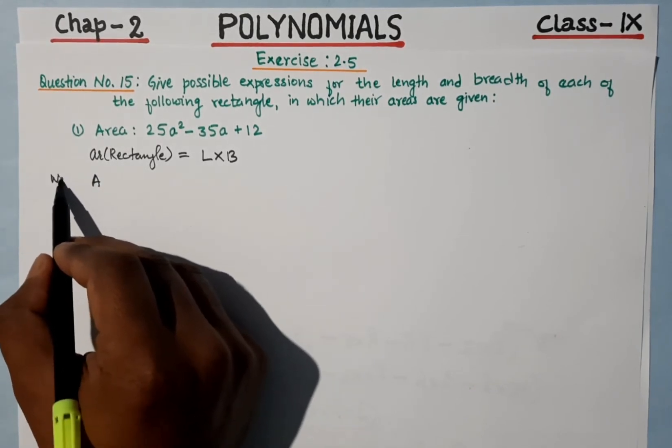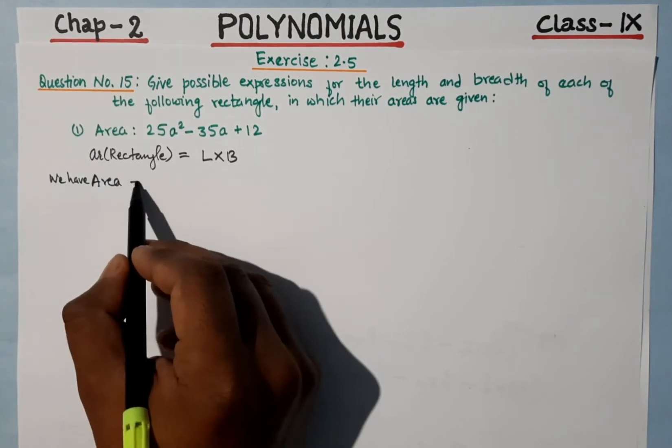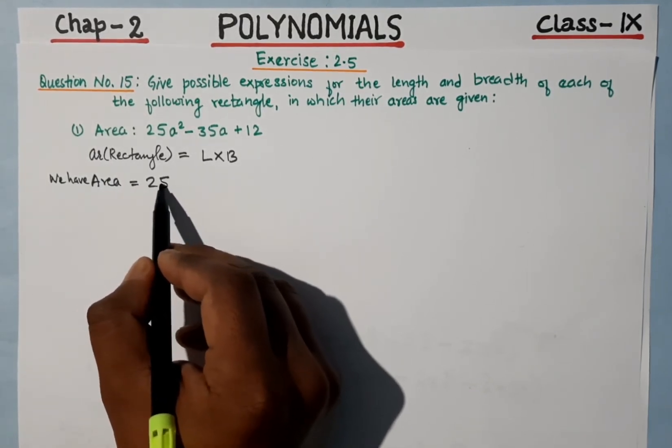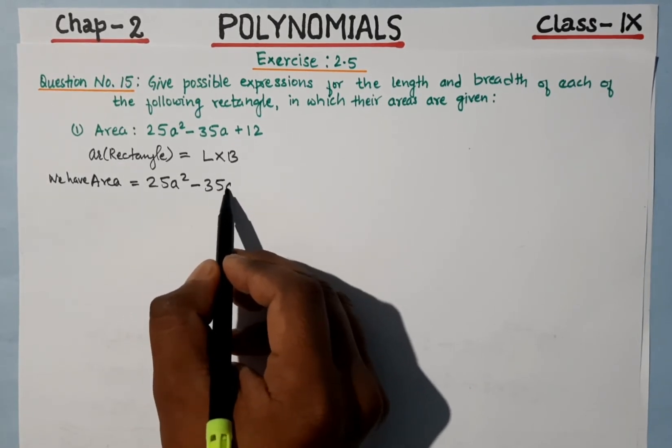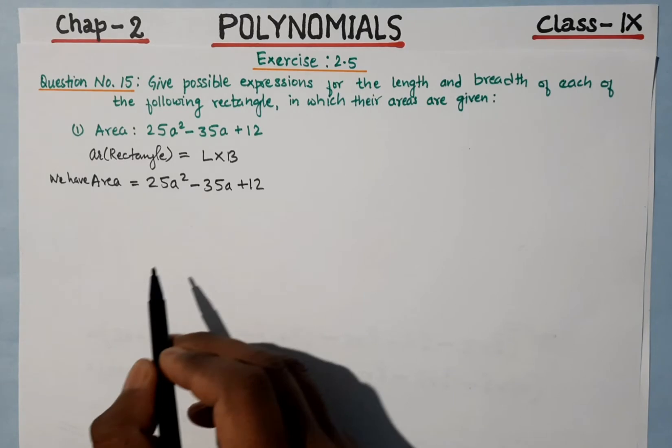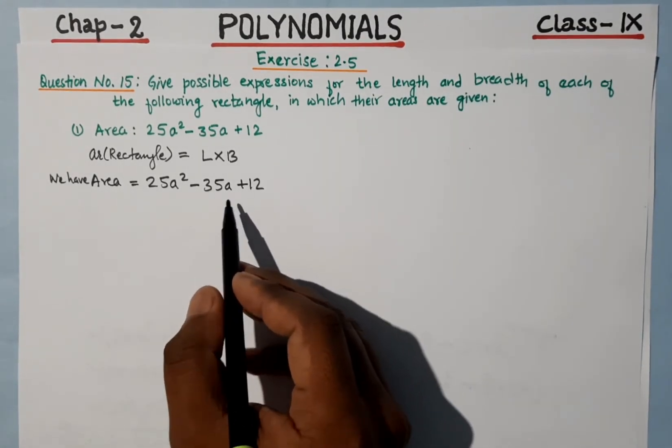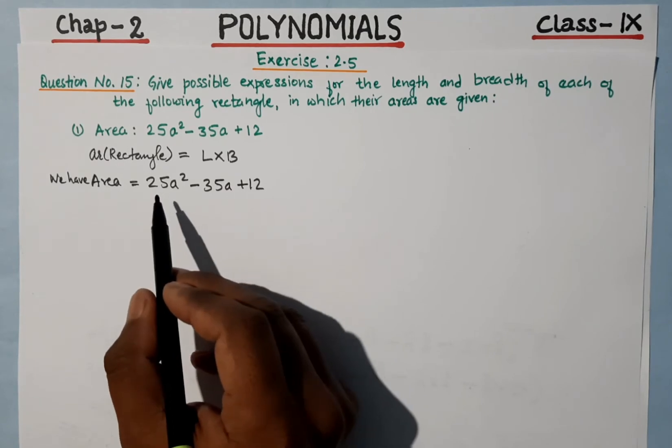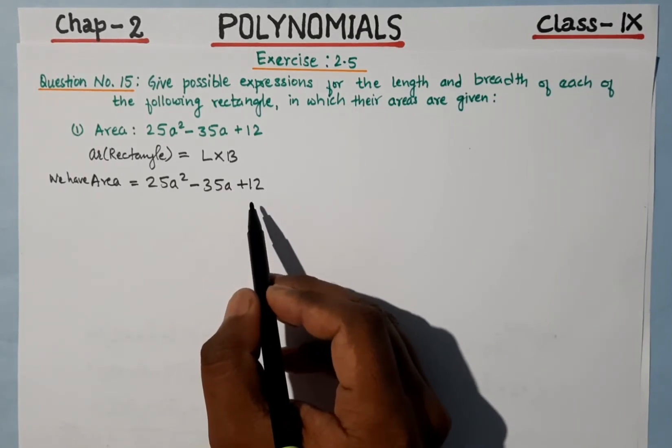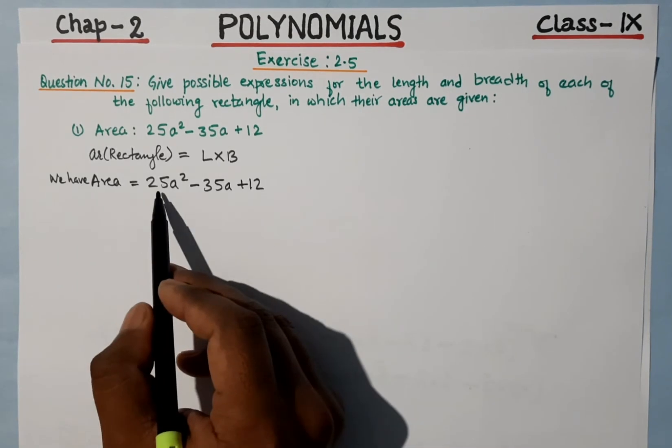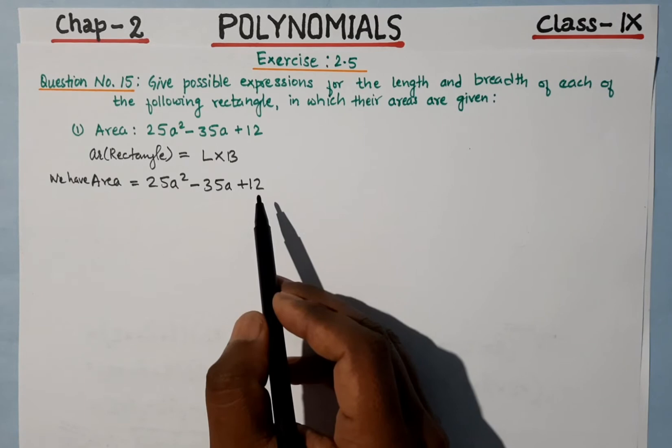We have area is equal to 25a² - 35a + 12. This is a quadratic polynomial. We need to factorize it. If it's a perfect square, we can use identity. Otherwise, we need to factorize it using other methods.